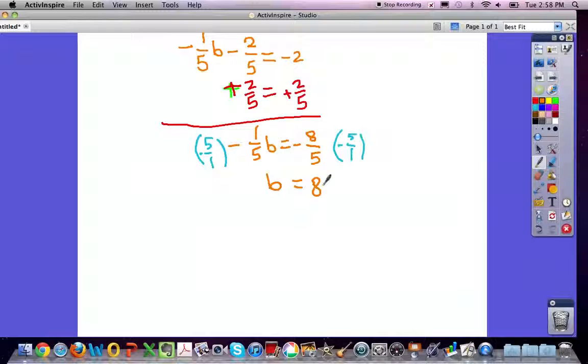The next thing we have to do is prove why this is correct. So we have to check it by rewriting the question. Negative 1 fifth times b, which is 8, minus 2 fifths equals negative 2. So negative 1 fifth times 8 equals negative 8 fifths minus 2 fifths equals negative 2.